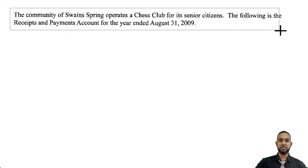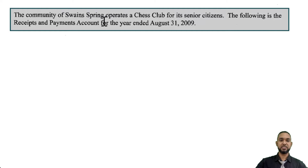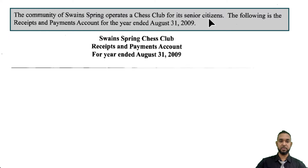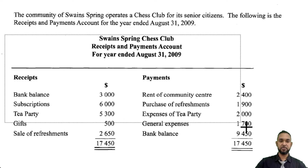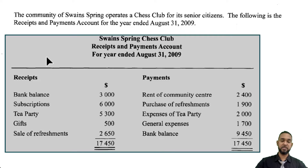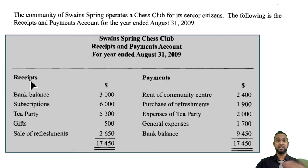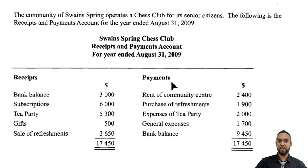Okay, with all that said let's get into the question. They're telling us that the community of Swain Springs operates a chess club for its senior citizens. The following is the receipts and payments account for the year ended August 31st 2009. This is basically a glorified cash book or cash account. The debit side is where money comes in — the receipts side — and the credit side is where money goes out — payments.